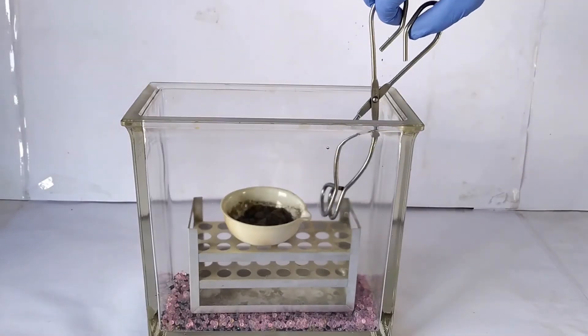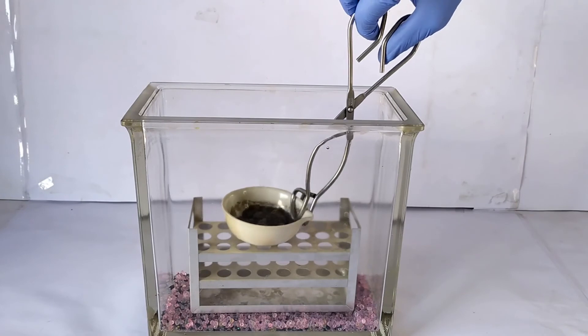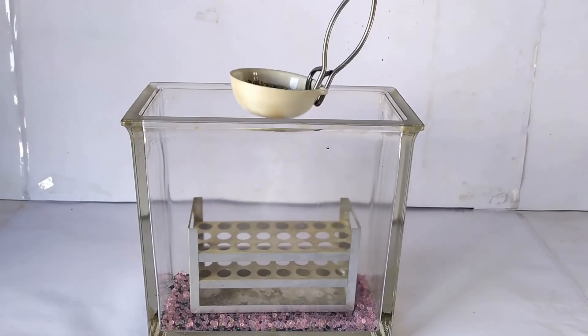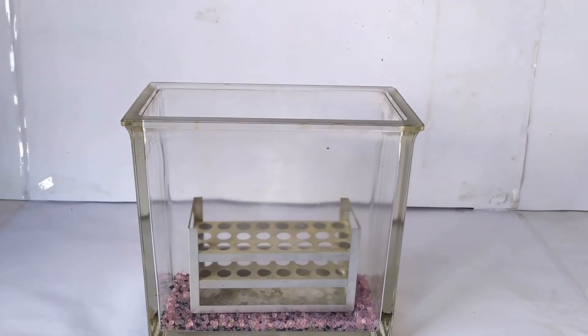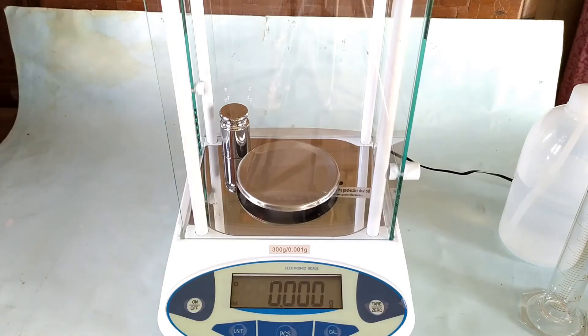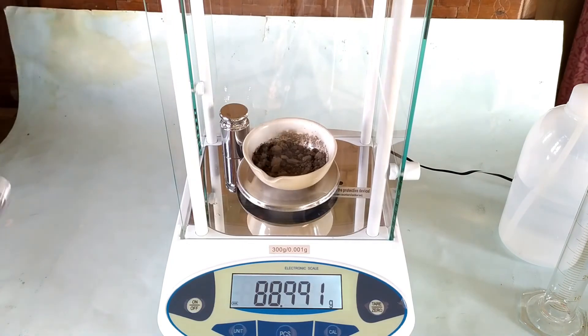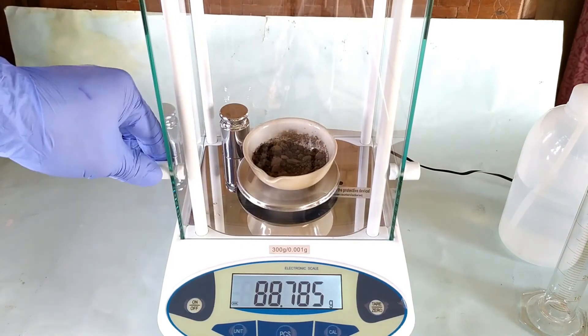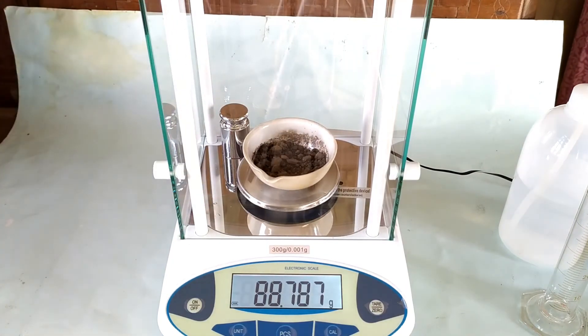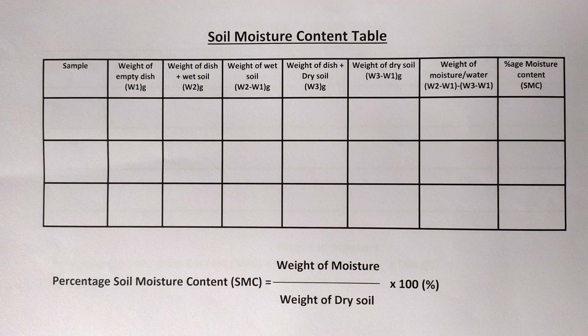The dish containing the dried and cooled soil sample is then removed from the desiccator and the final weight of the soil recorded after making deductions for the weight of the empty dish. Subsequent calculations for determining the soil moisture content are the same as the previously discussed crucible method.